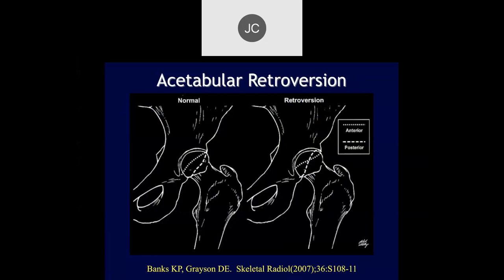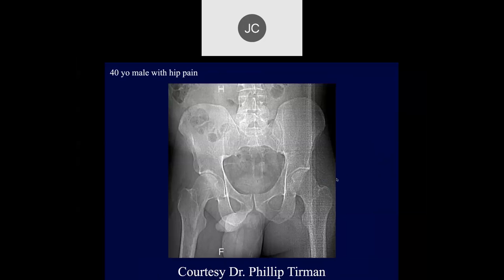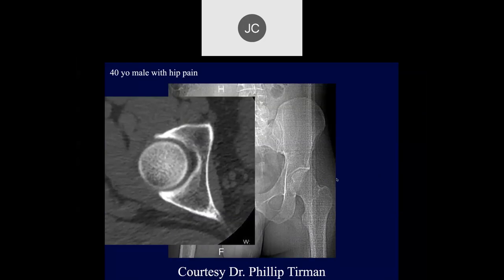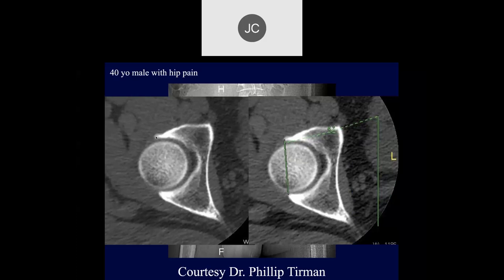With retroversion the anterior acetabular wall comes back, creating a figure-of-eight sign. You have to be very careful about pelvic positioning — asymmetry requires ensuring no rotation. A more accurate way to evaluate is with CT, where normally the anterior acetabulum should be medial to the posterior acetabulum. Here we can see the anterior acetabulum is more anterior, with about four degrees of retroversion. 3D reconstructions can be very helpful; this is a common location for hypertrophic bone formation causing impingement.